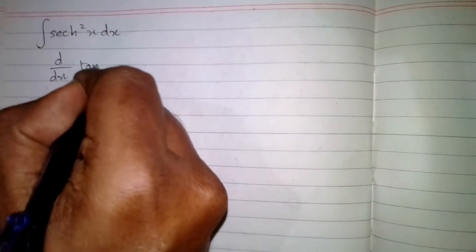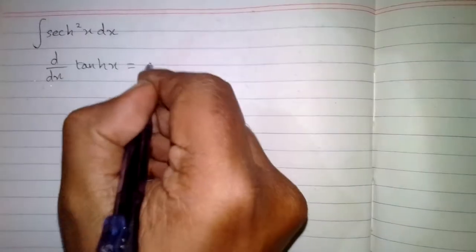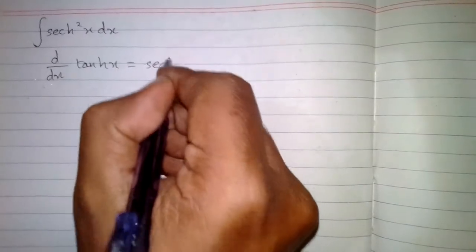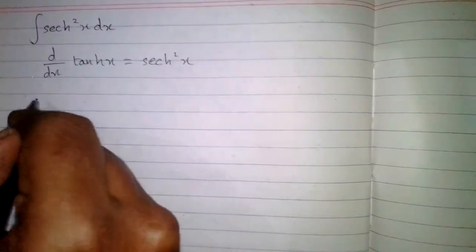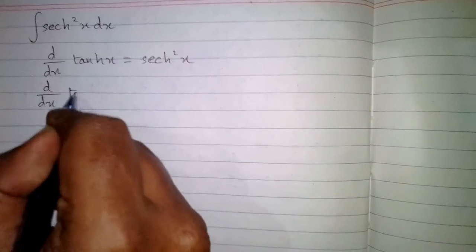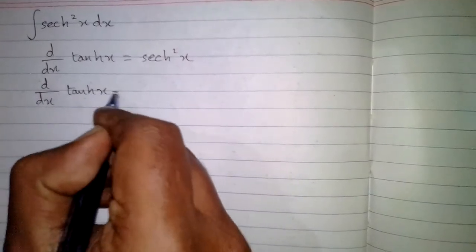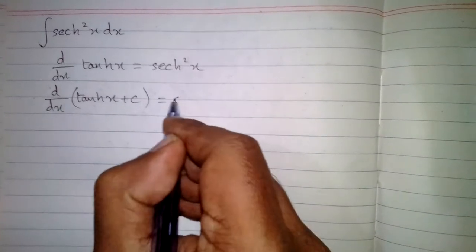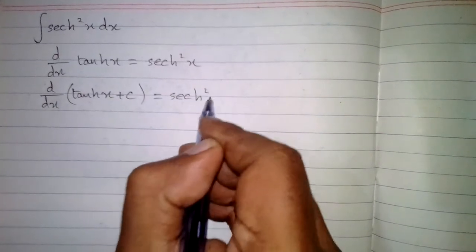In this video we will find the integral of hyperbolic sec square X. We know that the derivative of hyperbolic tan of X is hyperbolic sec square X, so the derivative of hyperbolic tan of X plus C is equal to hyperbolic sec square of X.